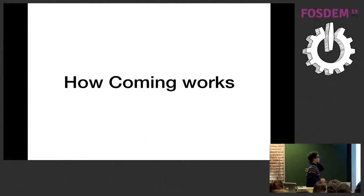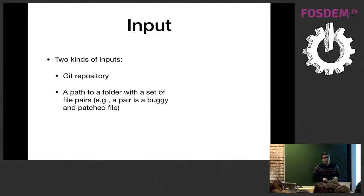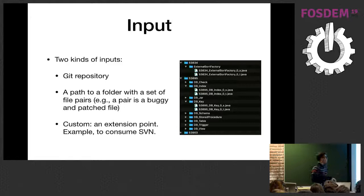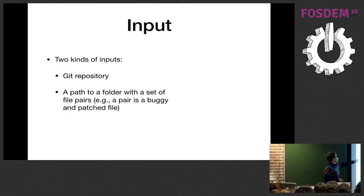So how does Coming work? The inputs are two: one can be the git repository we want to mine and analyze. Optionally, we have another format — a folder with pairs of files, where one file of the pair is the buggy version and the other is the patch. If you don't have a git repository, Coming is able to analyze pairs of files. In this talk, I will suppose that we analyze git commits.